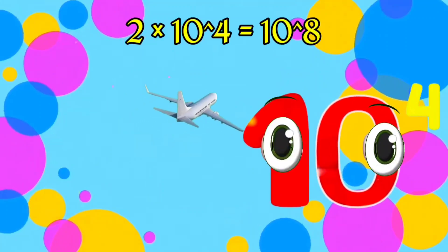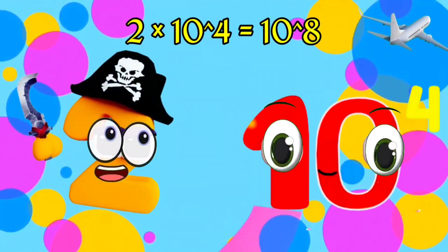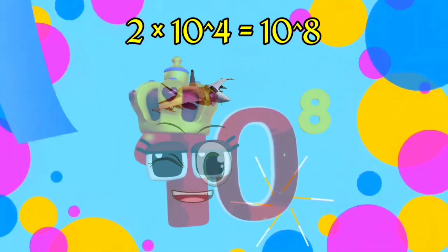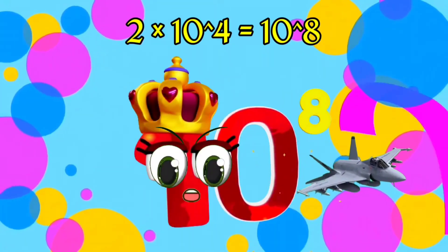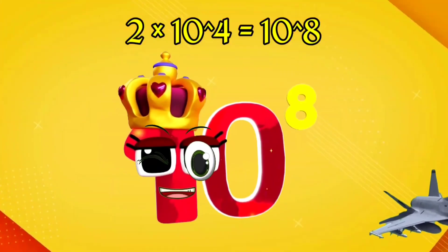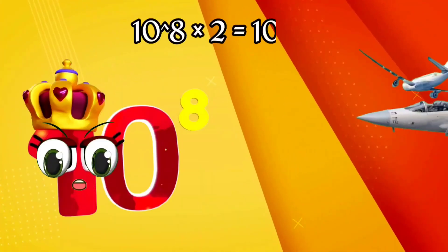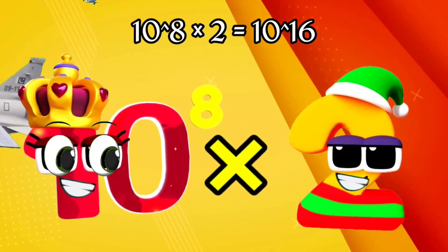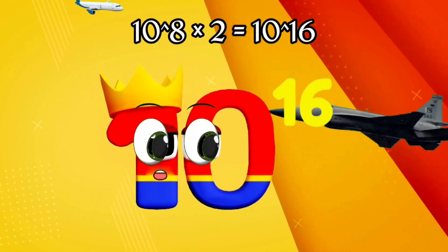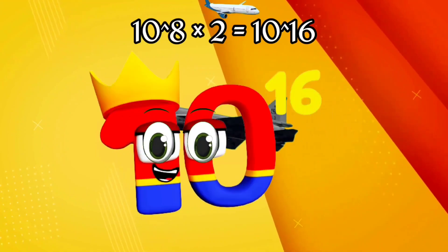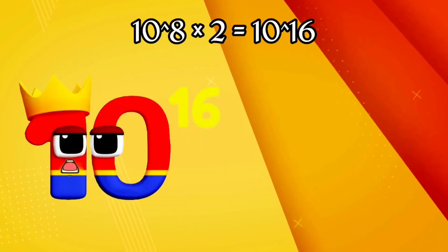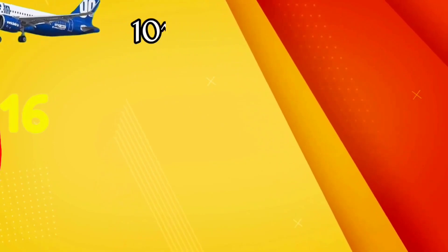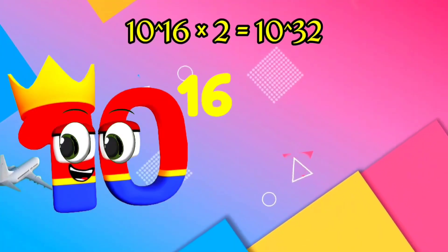I am 100 million and I have eight zeroes. Two times. I'm 100 million, and I've got eight zeroes! Times two! Equals! Ten quadrillion! Ten quadrillion!